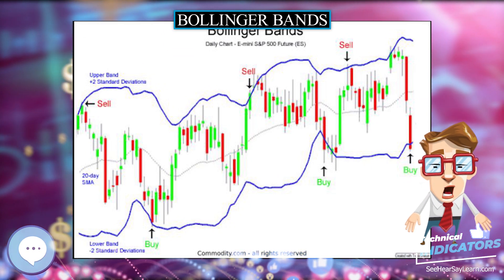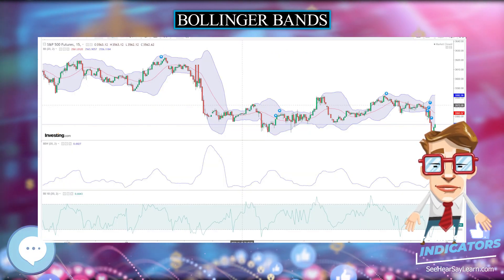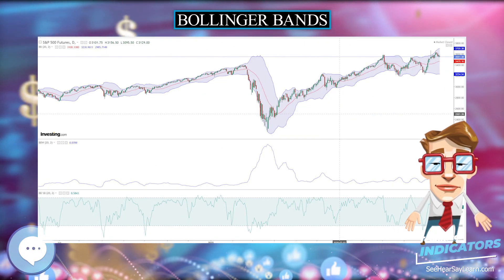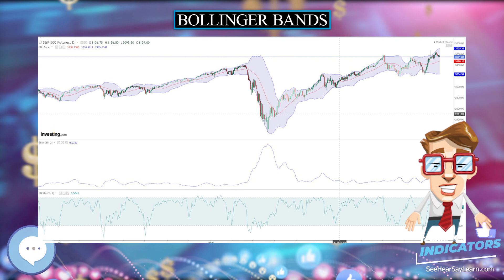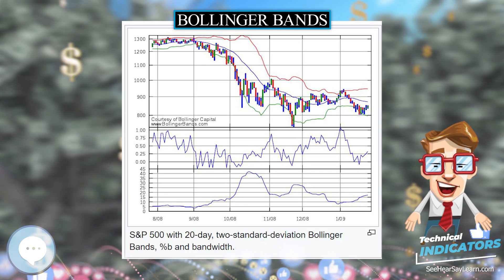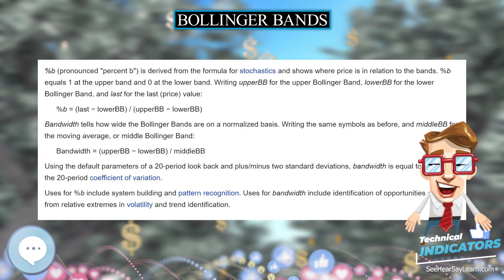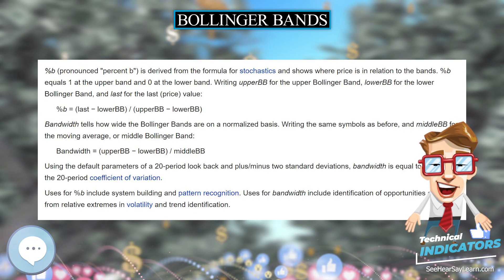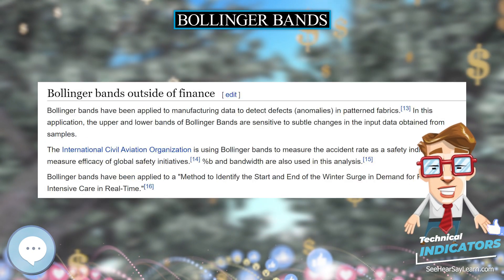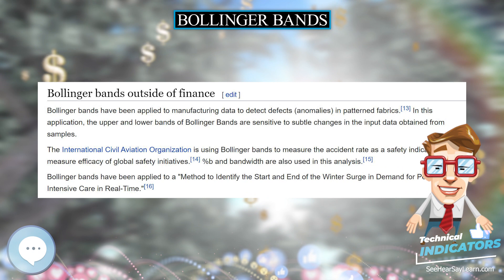Bollinger Bands consist of an N-period moving average (MA), an upper band at K times an N-period standard deviation above the moving average (MA plus K sigma), and a lower band at K times an N-period standard deviation below the moving average (MA minus K sigma). The chart thus expresses arbitrary choices or assumptions of the user, and is not strictly about the price data alone.